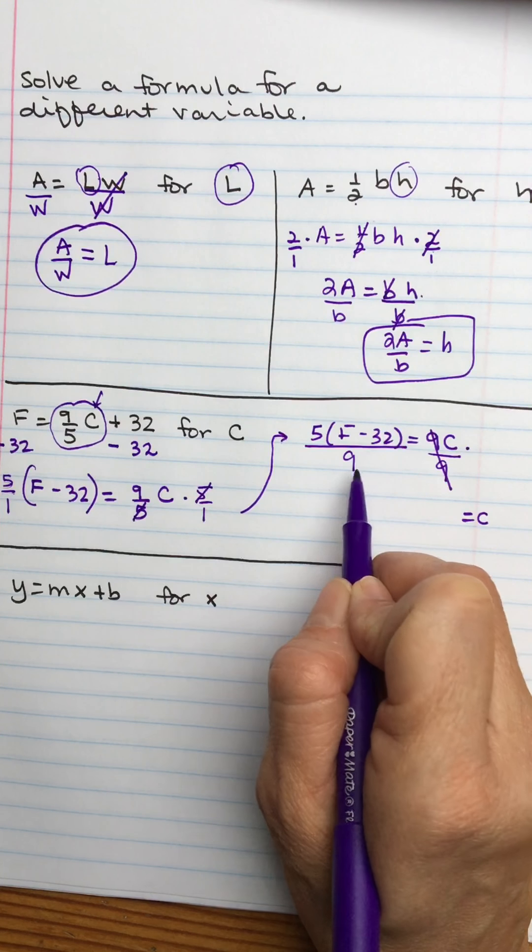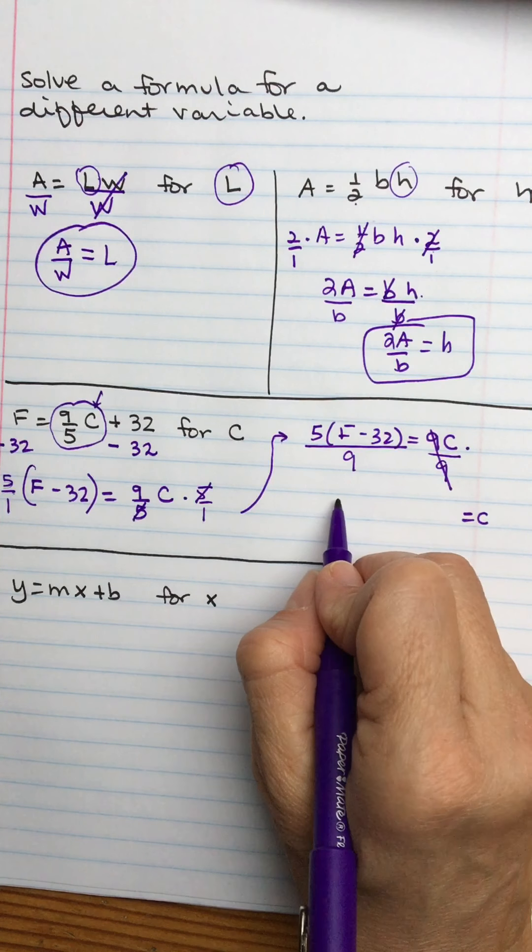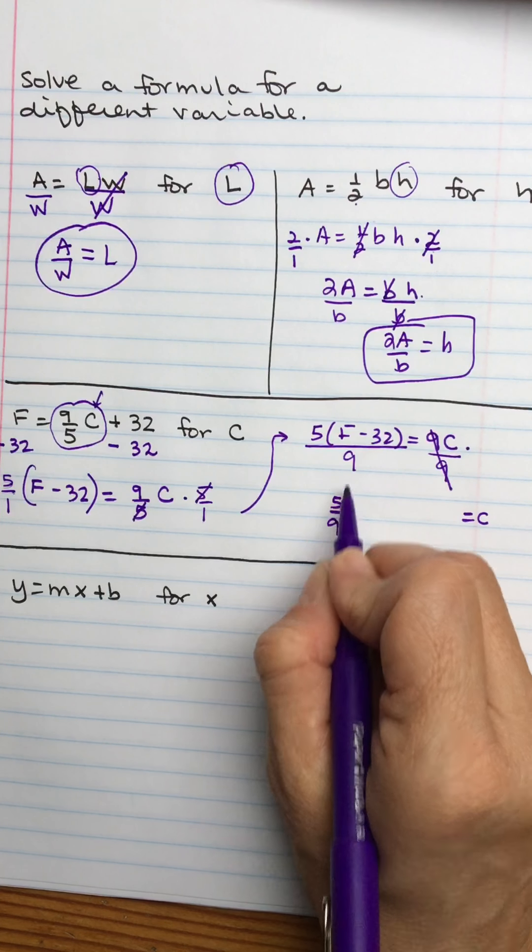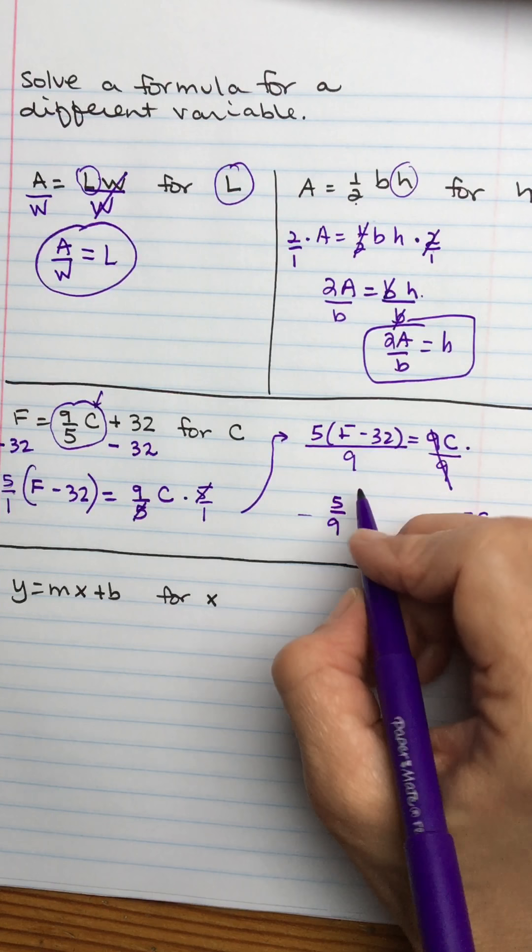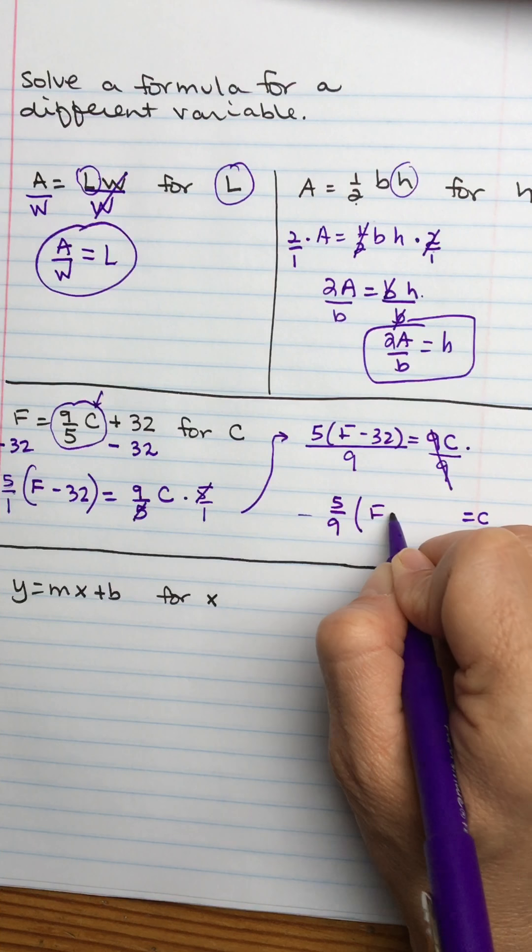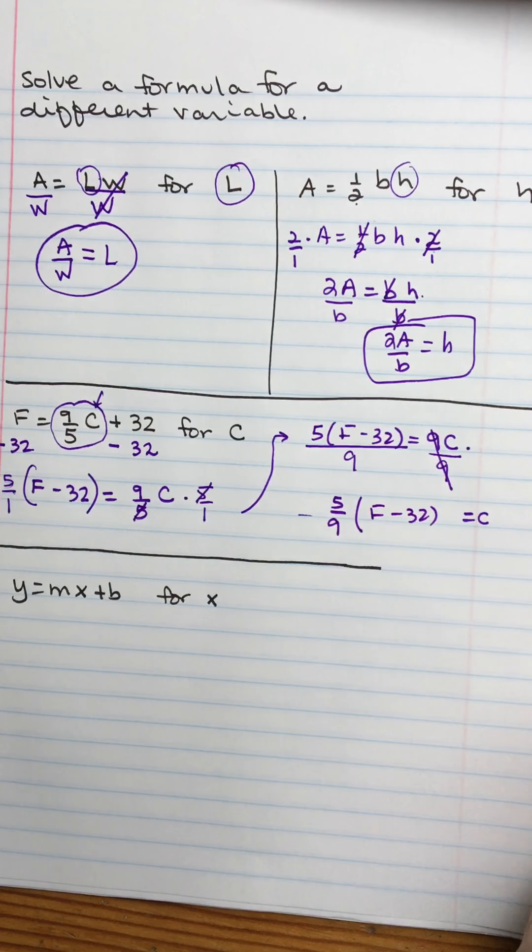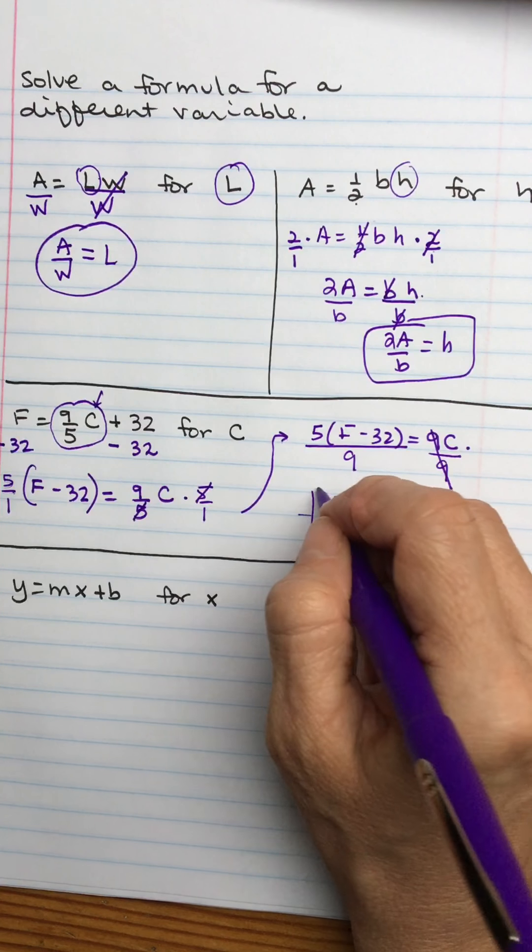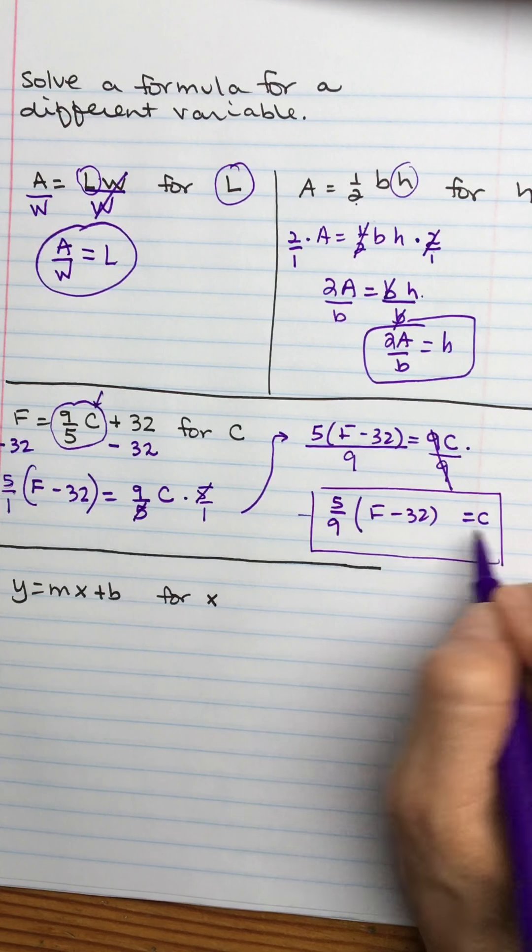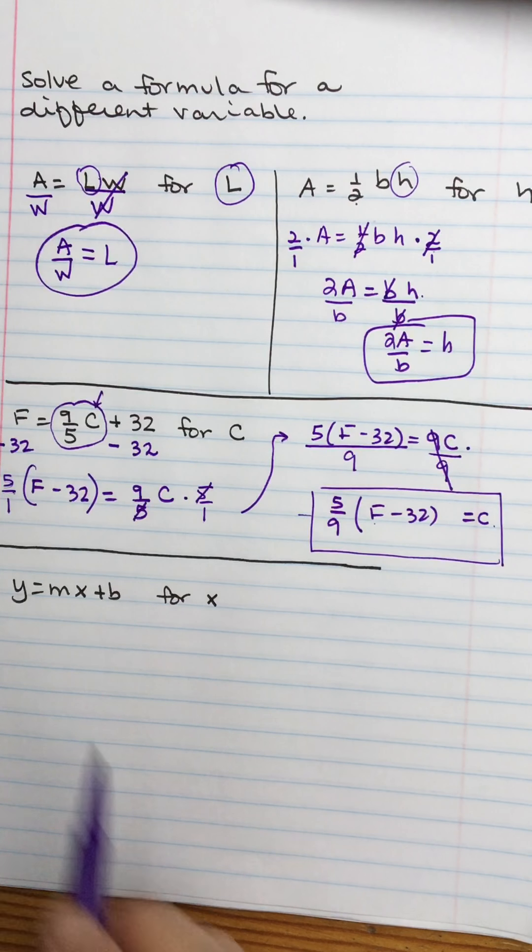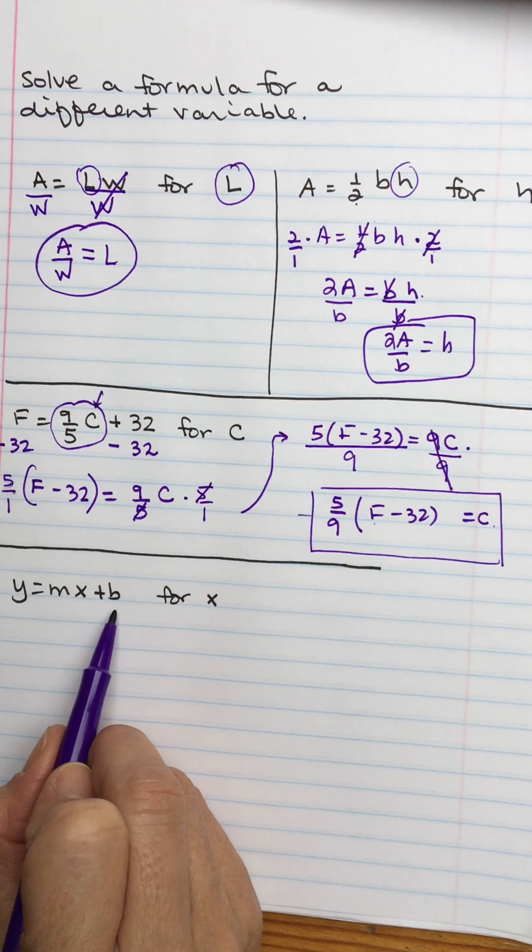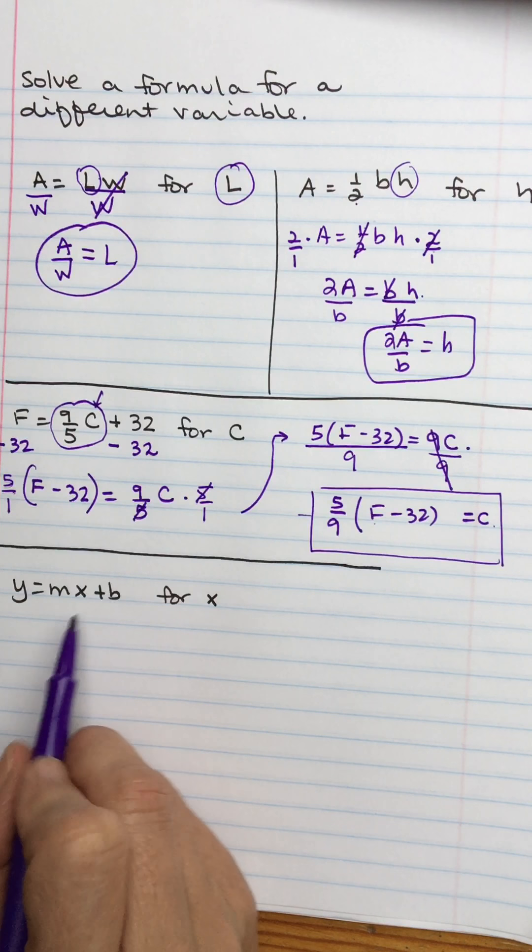And on the left, you can either write it how I have it left here, so 5 times F minus 32 in the numerator, 9 in the denominator. Or that 9 can kind of scoot over here to the left and become a 5 ninths times F minus 32. So that would let us convert if we knew the degrees Fahrenheit into degrees Celsius.